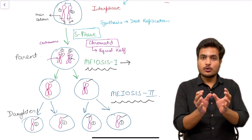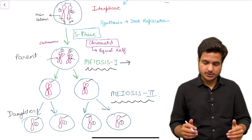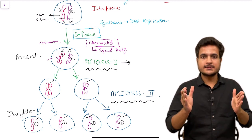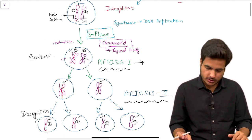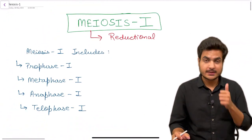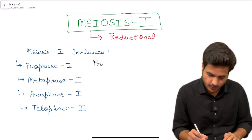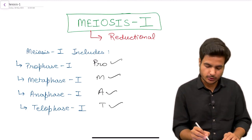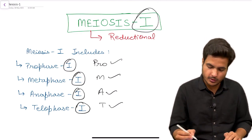In meiosis 1 the homologous pair splits and each daughter gets one chromosome from the pair. In meiosis 2 the sister chromatids split and each daughter gets one chromatid from a single chromosome. Meiosis 1 includes four stages, just like mitosis, learned with the mnemonic PROMAT: prophase, metaphase, anaphase, and telophase — just add the suffix '1' to indicate meiosis 1.